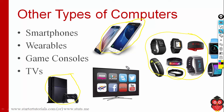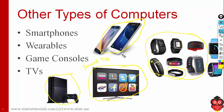We also have smart TVs, using which we can access the internet and applications such as Facebook, YouTube, Twitter, Skype, and Netflix for watching movies. Such TVs are called smart TVs. So these are the various types of computers we have covered.